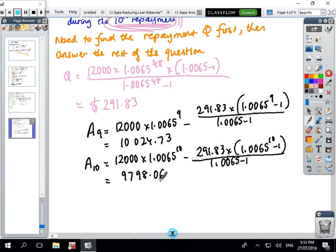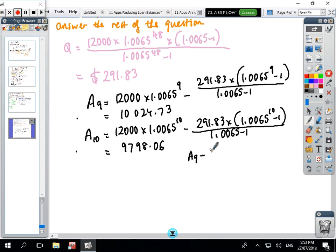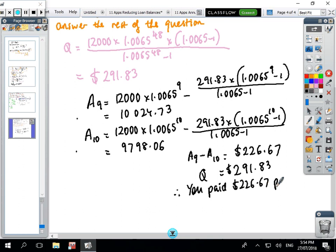After 9 payments you owe that, after 10 payments you owe that. So the difference between those, A₉ minus A₁₀ equals $226.67, but your repayments was $291.83. Therefore, you paid $226.67 off the principal and you paid the difference between those two numbers, $65.16, in interest. We'll go through that again at the end.